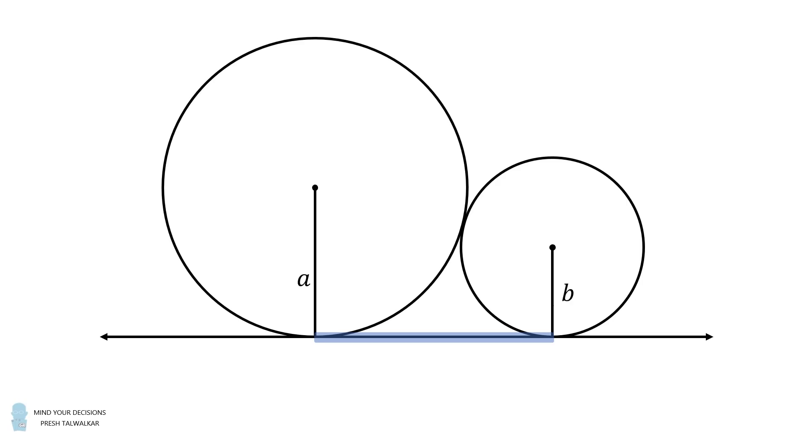We want to solve for the length of the common external tangent. That's the line segment that's highlighted. So how do we do that? First, we will construct a line segment between the two centers of the circles. This will go through the tangent point.